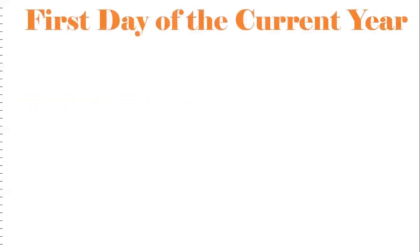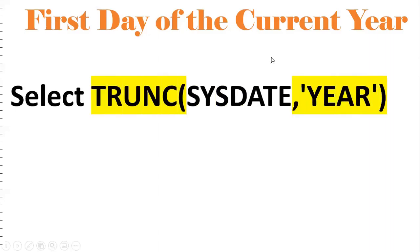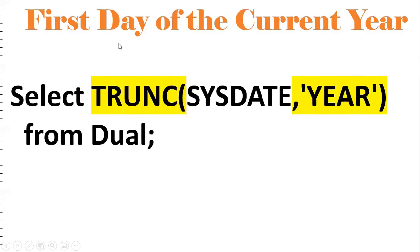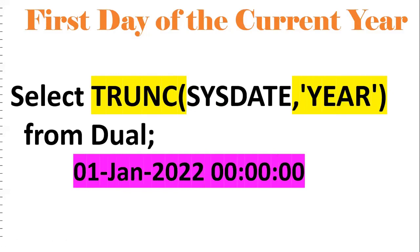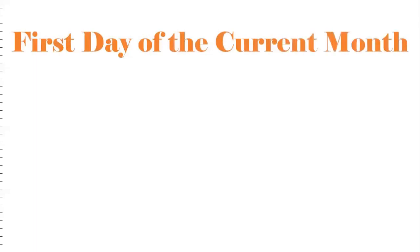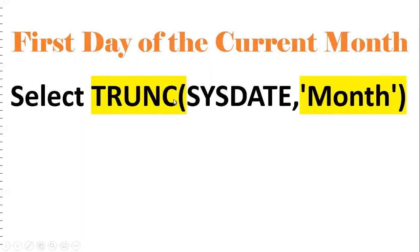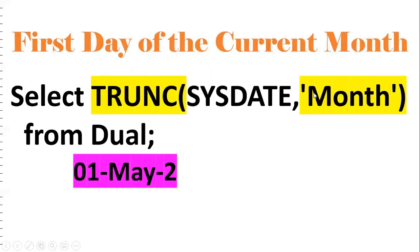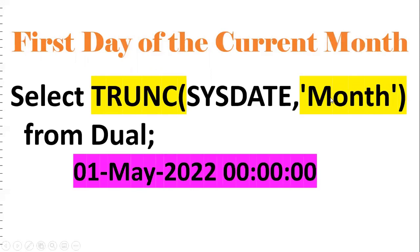Next: first day of the current year — this is an important interview question. By using the TRUNC function we can achieve this: TRUNC(SYSDATE, 'YEAR'). It will give the first day of the current year, which is January 1st, 2022. For the first day of the current month — current month is May — we use TRUNC(SYSDATE, 'MONTH'), which gives May 1st, 2022. If you want the first day of the year, pass 'YEAR'; for month, pass 'MONTH'.